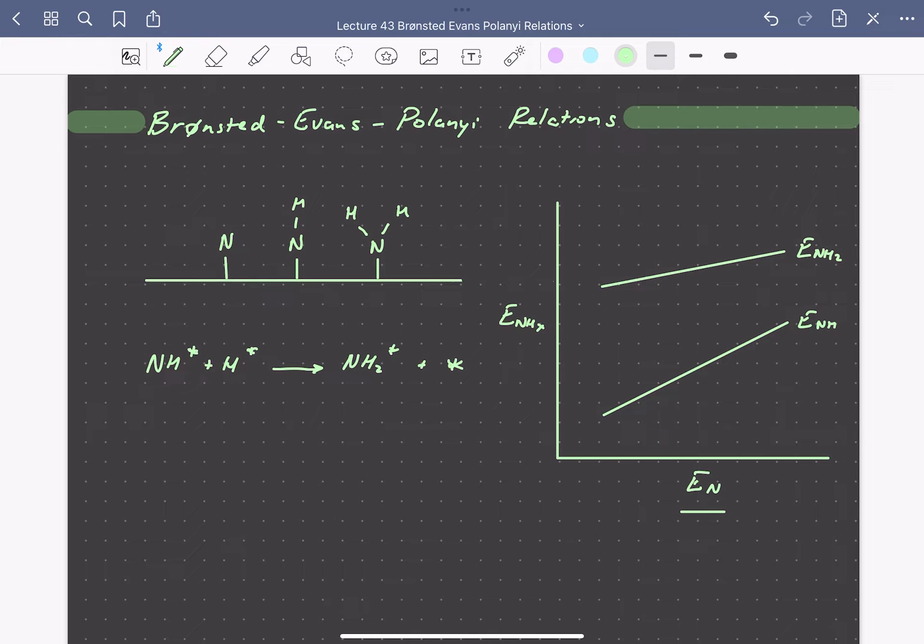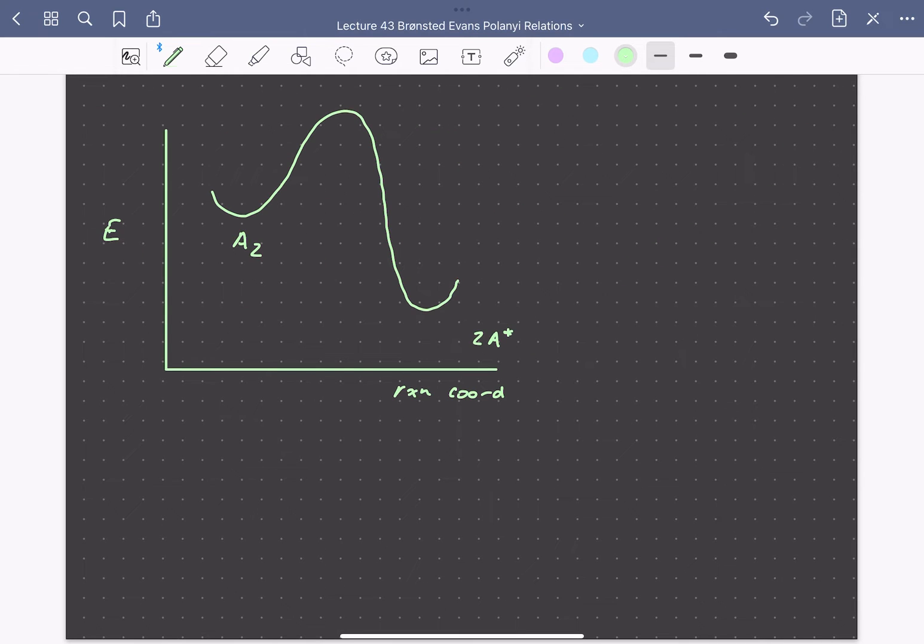Let's consider this Bronsted-Evans-Polanyi relationship on a reaction coordinate diagram. Here we're looking at the dissociative adsorption of A2 to form 2A*. What the Bronsted-Evans-Polanyi principle or BEP relationship tells us is that if we do something to stabilize the product state here, the transition state will be stabilized by some related quantity. Essentially, since the transition state has some molecular resemblance to the final state, it will respond to changes in reaction energy, or in this case the energy of the adsorbed product state.